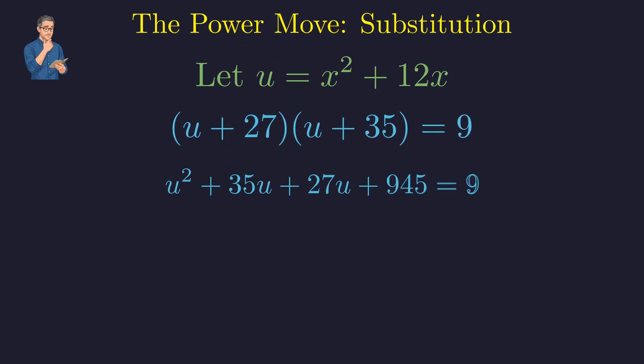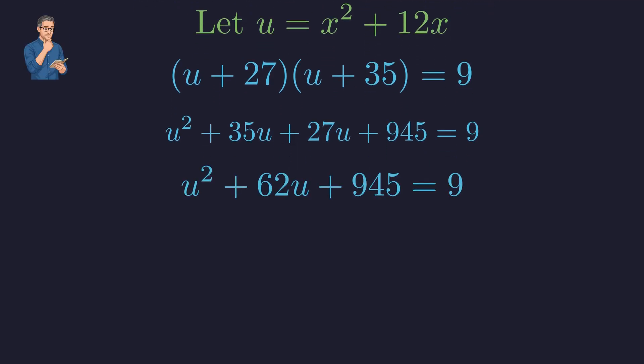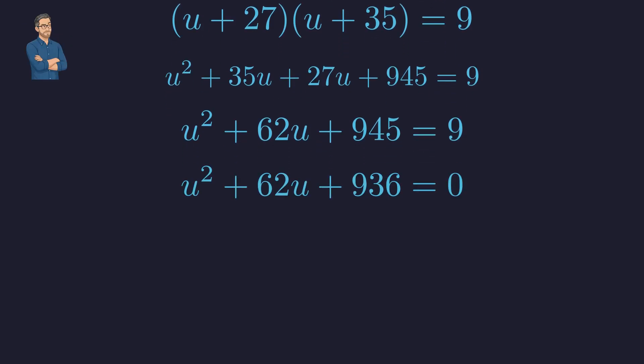We expand the left side term by term. Combining the middle terms gives us this expanded quadratic. Subtracting 9 from both sides puts it in standard form, ready to be solved.